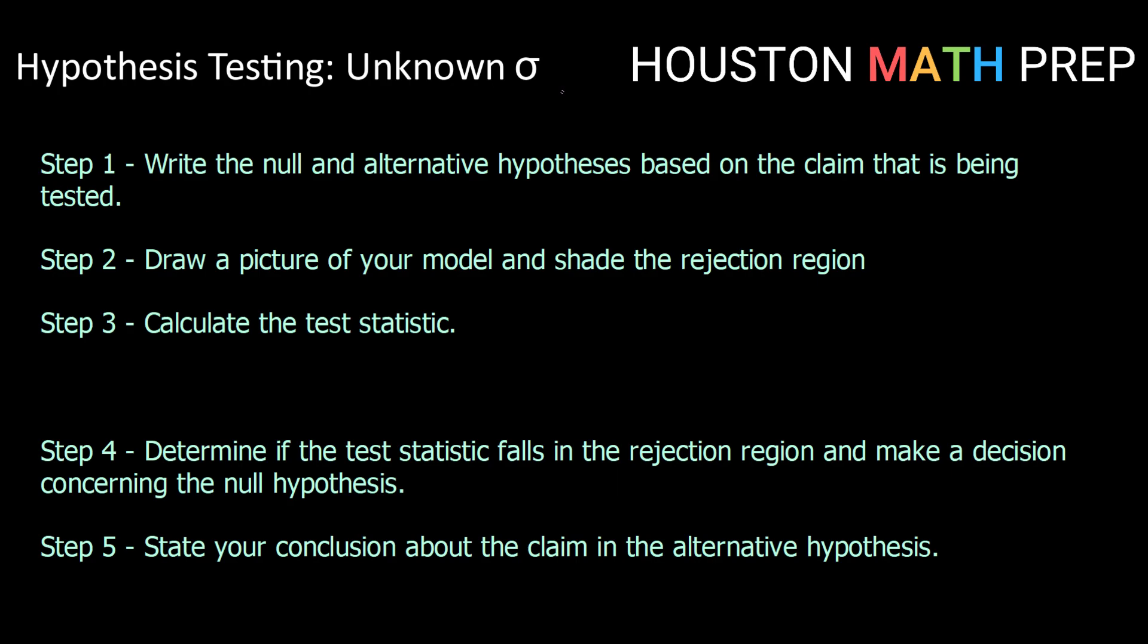So steps one and two are going to be exactly the same. We are going to read our claim, write our null hypothesis which will be h sub zero, and then it will still be about mu and it will still be a state of equality. So we will still be writing mu equals some number.